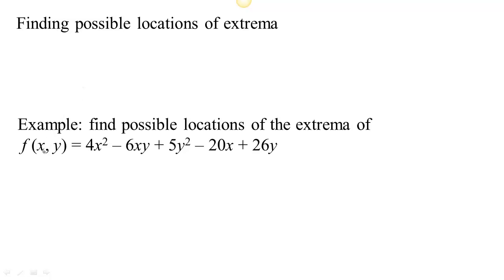If our function depends on multiple variables, how are we going to find the critical values — the possible locations where we might have a max or a min? The answer is by considering the directional derivative. We can take the directional derivative of our function in the direction of any unit vector.